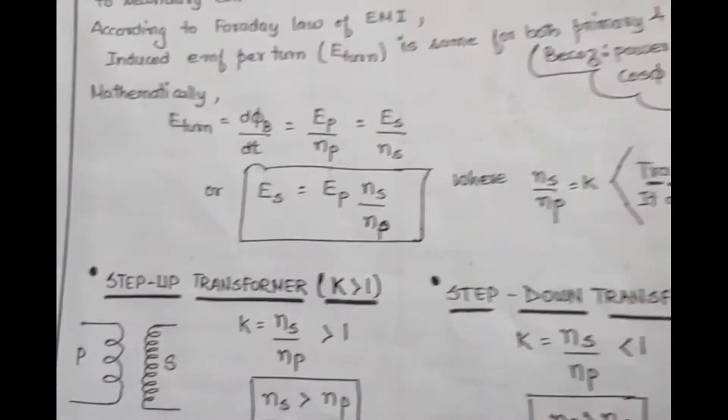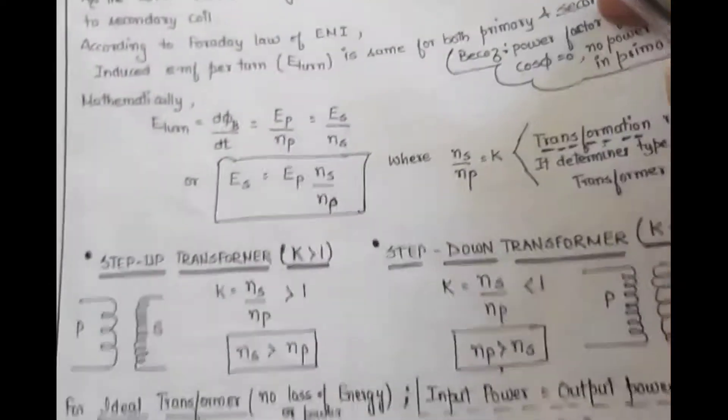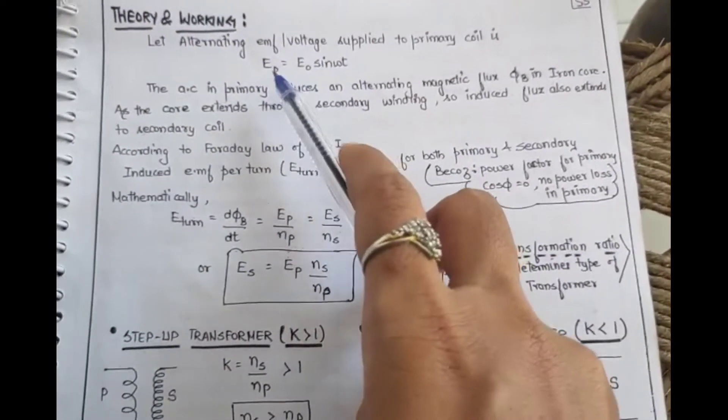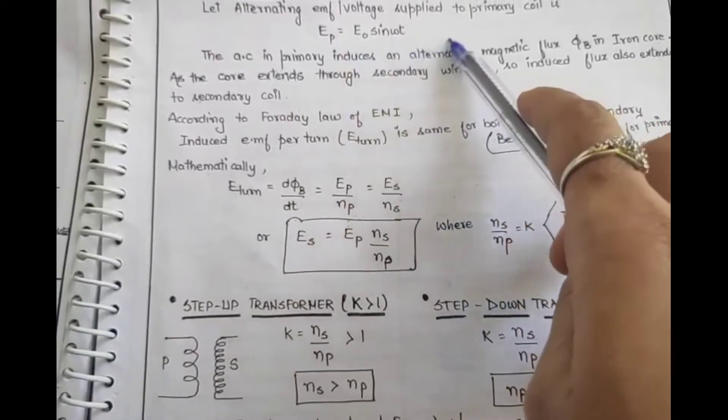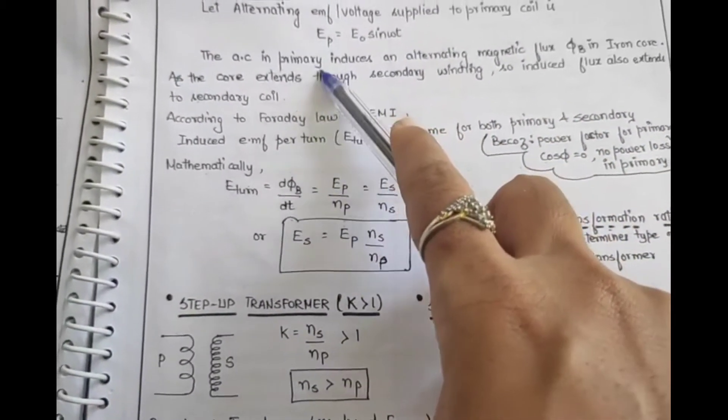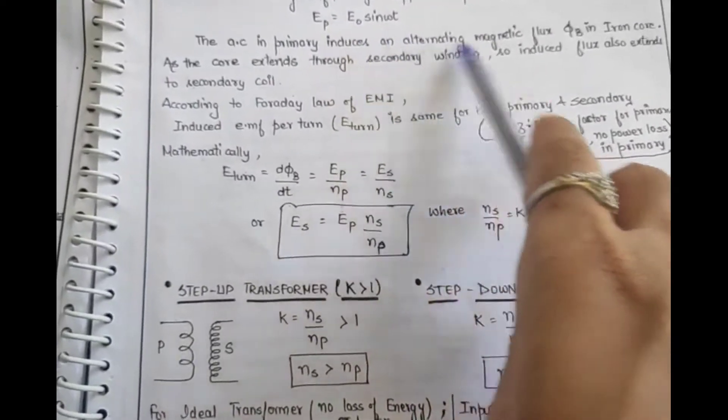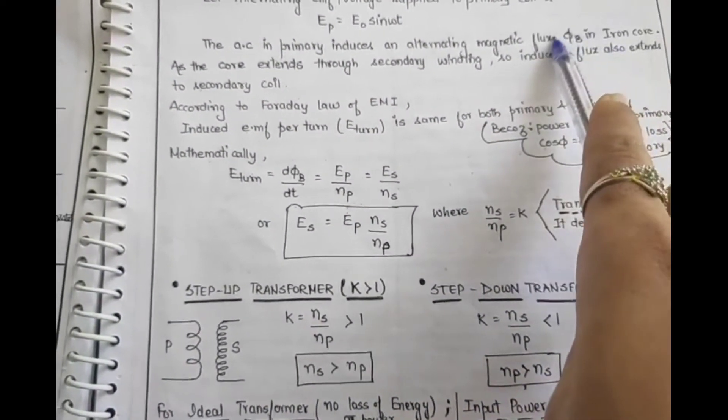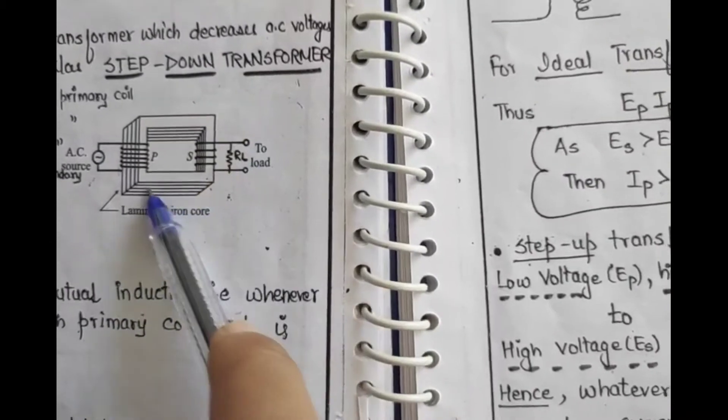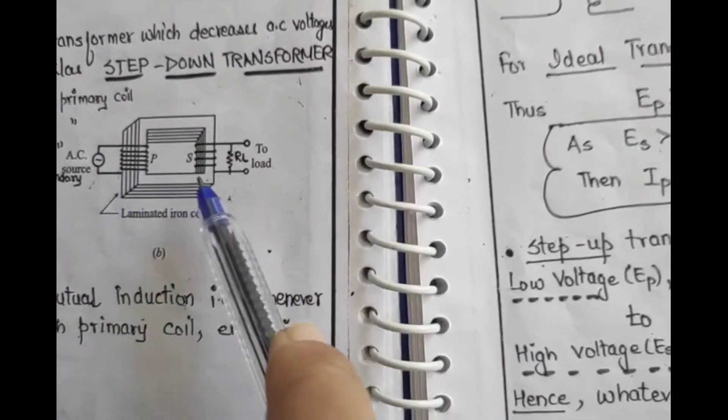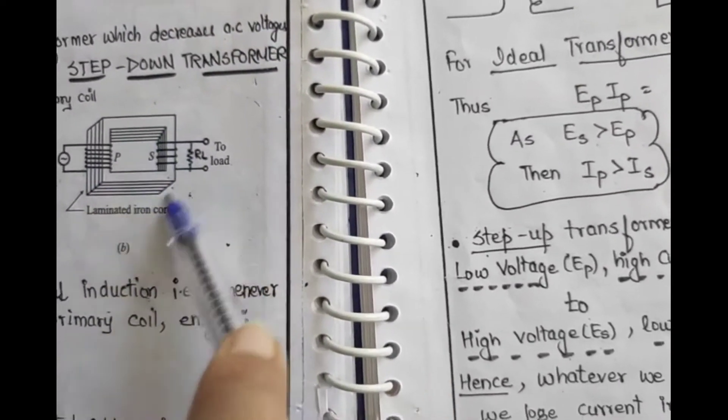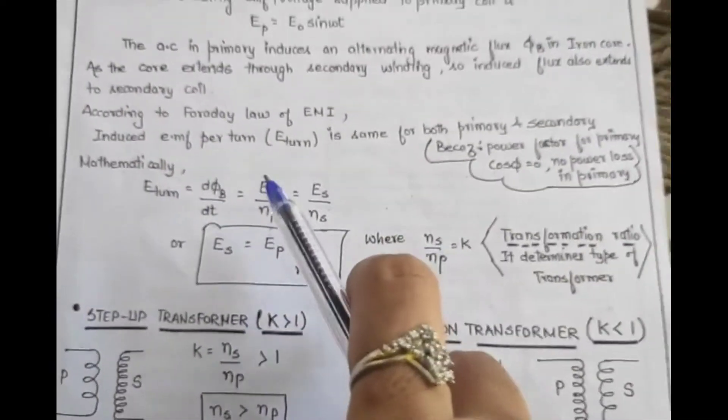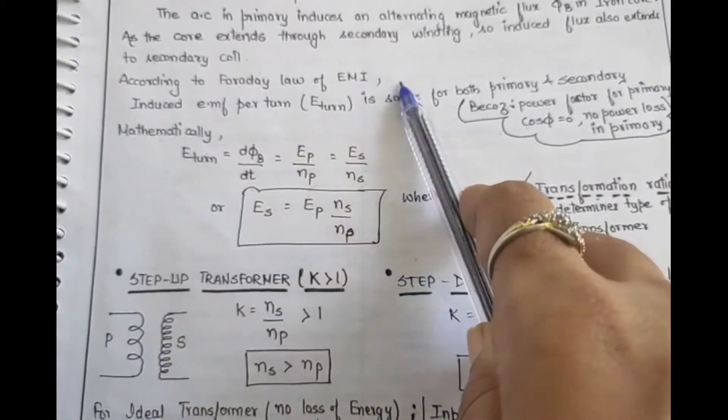Let us move to the theory and working part. The alternating EMF that we supply to the primary coil is in AC form. So it is EP = E₀ sin(ωt). As we give AC supply to the primary coil, magnetic flux will be induced and will change in the iron core. This iron core, as you see in the figure, is extended from primary to secondary, so the flux change in primary will be equal to the flux change in secondary. And Faraday says, when the flux of any coil changes, then induced EMF occurs in it. This is the working principle.